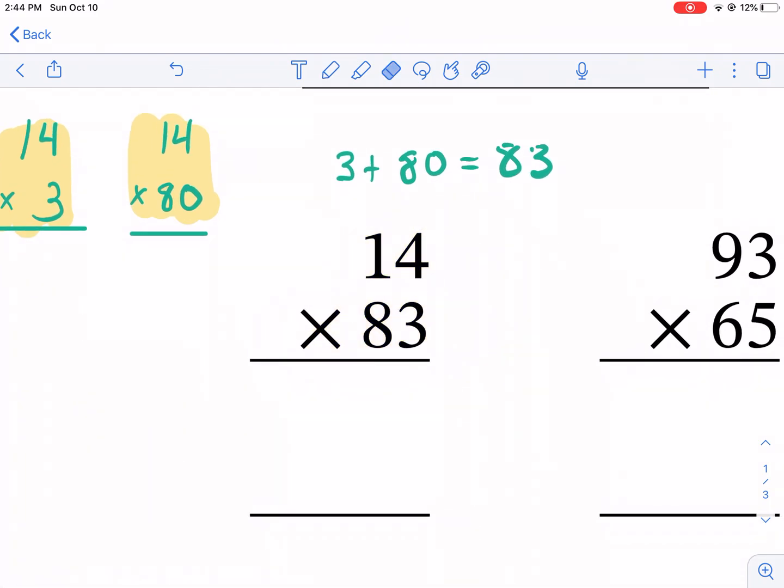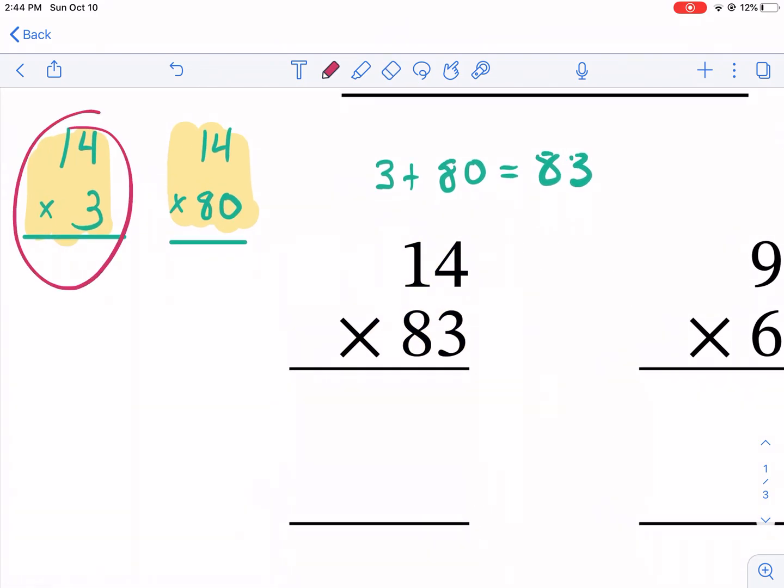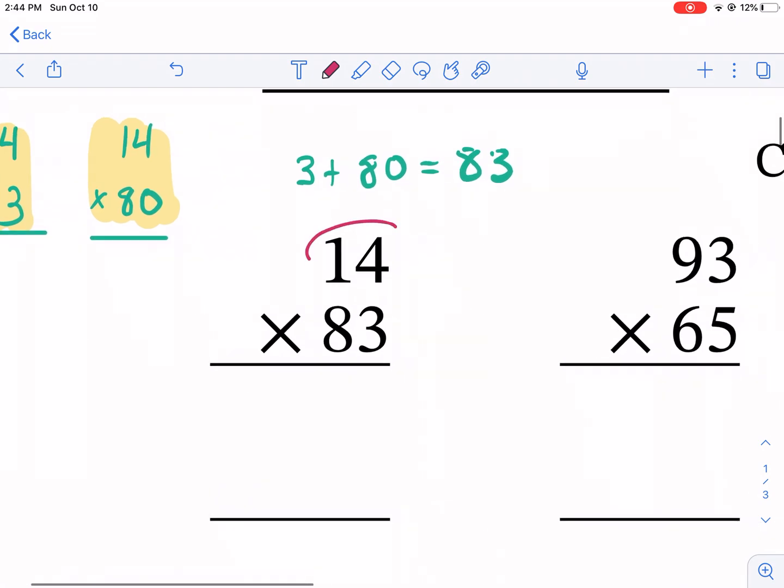Let's go ahead and break down how we're going to do that. My first line is where I'm going to be multiplying by the three. So 14 times three. What I do is I do the four times the three first and that gives me 12, but I can't put both numbers. I have to carry it over to the tens place.